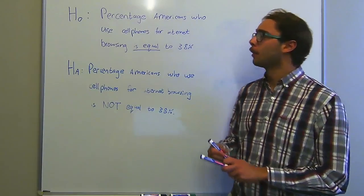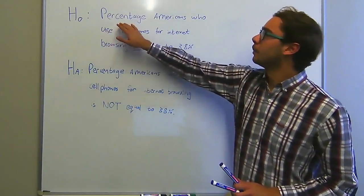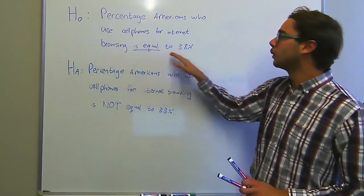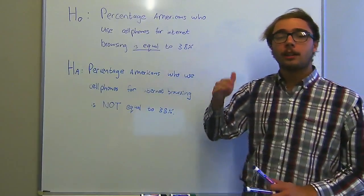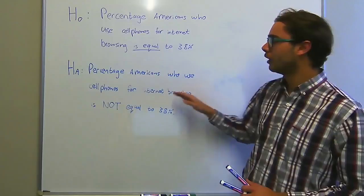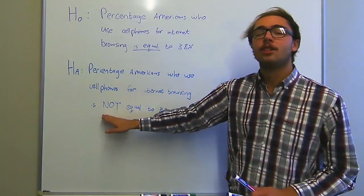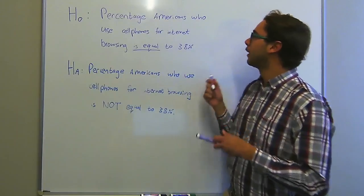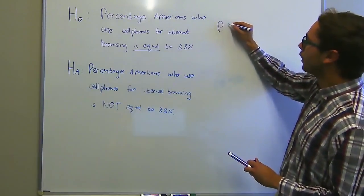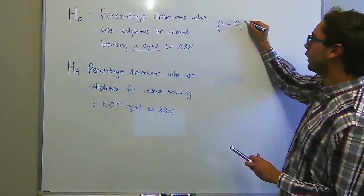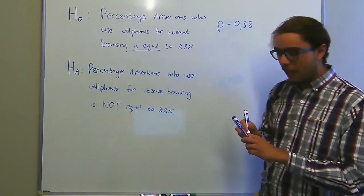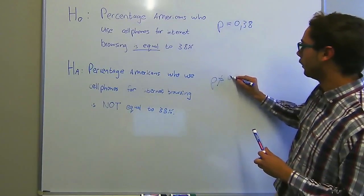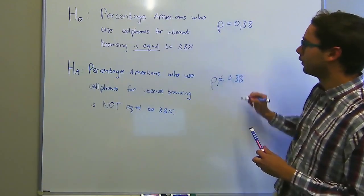Let's formulate our hypothesis test. Our null hypothesis says that the percentage of Americans who use cell phones for internet browsing is equal to 38%. And our alternative hypothesis says the percentage of Americans who use cell phones for internet browsing is not equal to 38%. So mathematically, our null hypothesis would be the proportion is equal to 0.38, and for our alternative hypothesis, the proportion would not be equal to 0.38.